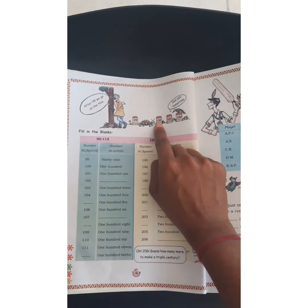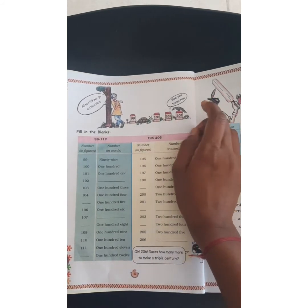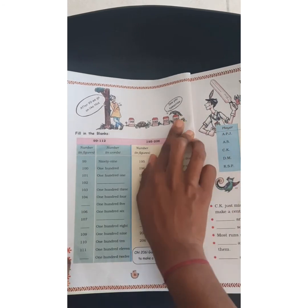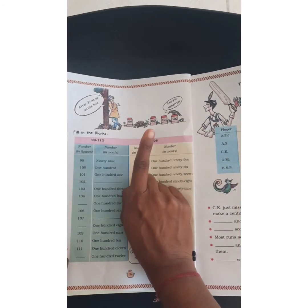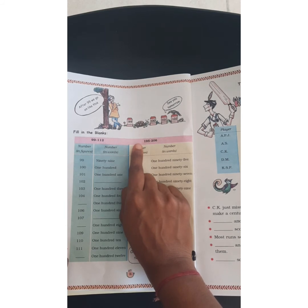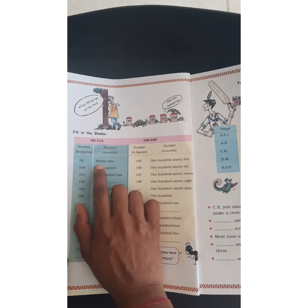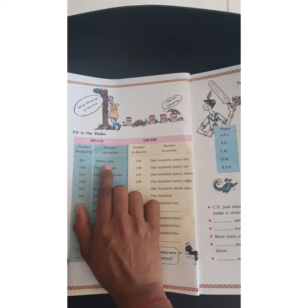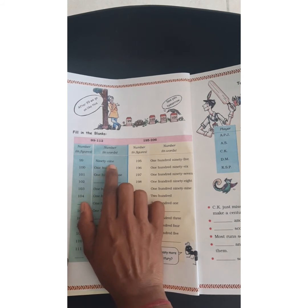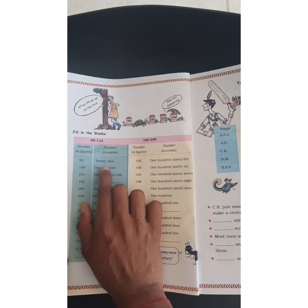How to write in number words or number name? Number in words — one you write as O-N-E. Same like 99: 99, you write N-I-N-E-T-Y N-I-N-E. This will be the number name or number in words for 99.